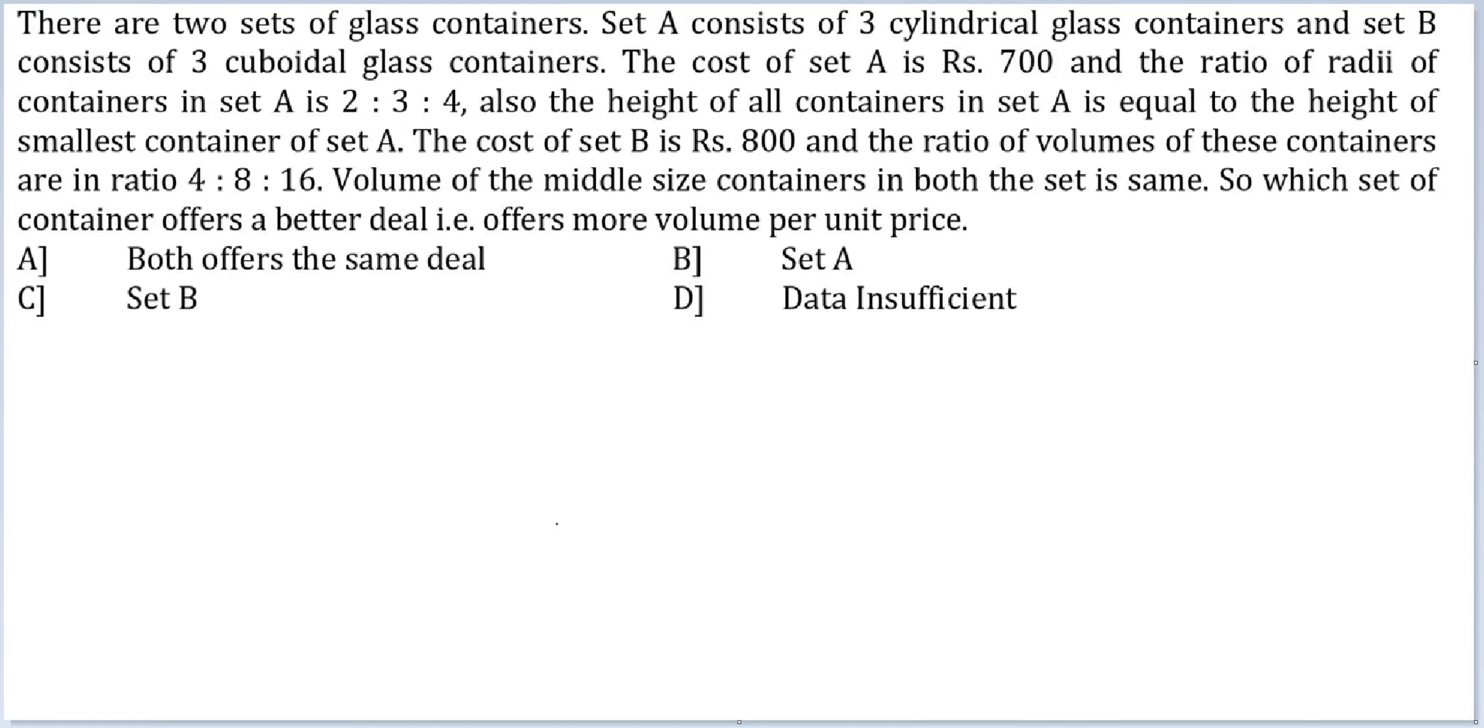set A container 1, container 2, container 3. Because their heights are identical, the ratio of their volume would be the same as the square of the radii. So it would be 4:9:16 for set A and it costs 700 rupees.